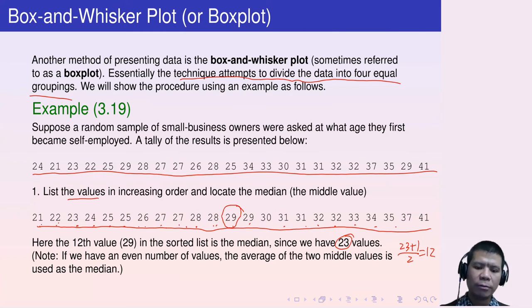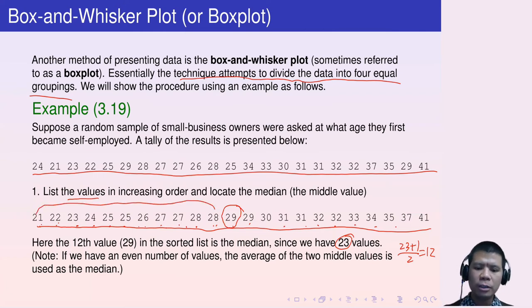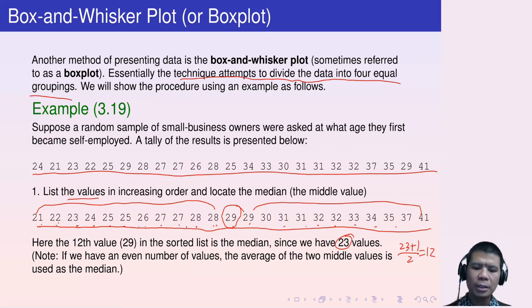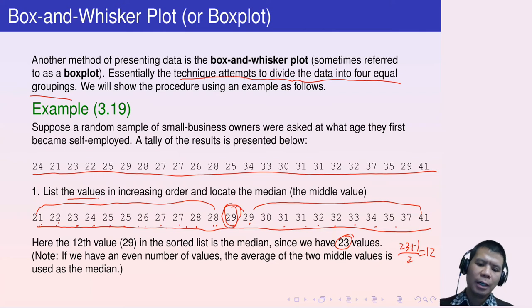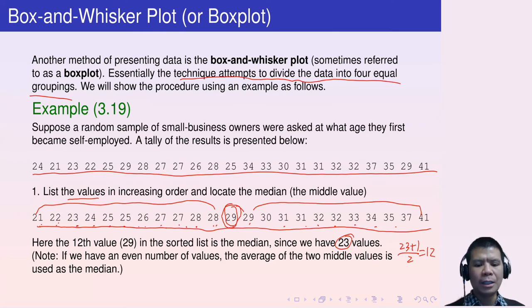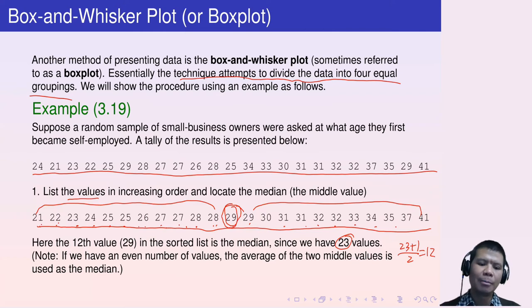Since 23 is an odd number, the middle value is at position (23 + 1) / 2 = 12. Counting to the 12th value, we get 29. So 11 values are to the left and 11 are to the right, plus 29 in the middle — totaling 23. Therefore, the median is 29. That completes step one: list the values and locate the median.